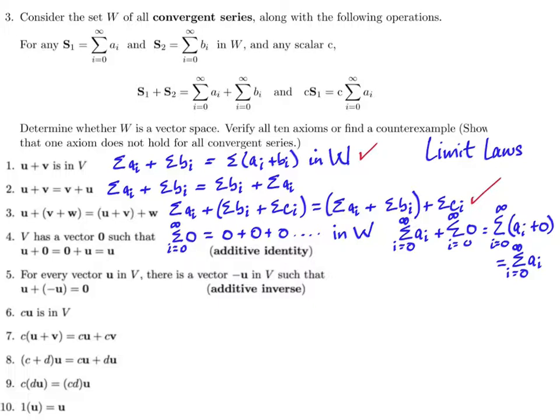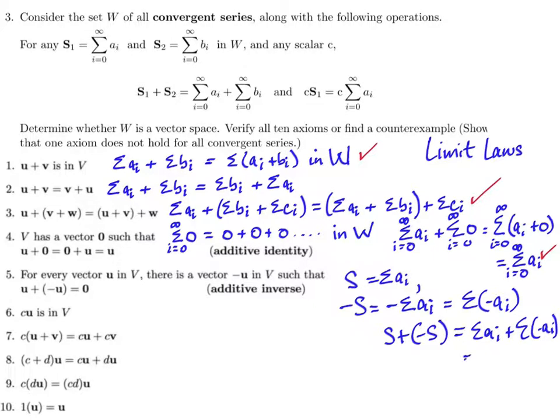So number five, is there an additive inverse for every vector in this set? Well, if you have a convergent series, so if S is a convergent series, then its additive inverse is just multiply S by negative one. So negative the sum from zero to infinity of aᵢ. So what you're doing is you're bringing that minus sign and distributing it to every term in the sum. And so when you add S plus negative S, when you add those together, you're adding corresponding terms. So you get the zero vector. So yeah, every convergent series has an additive inverse. And so we can continue.